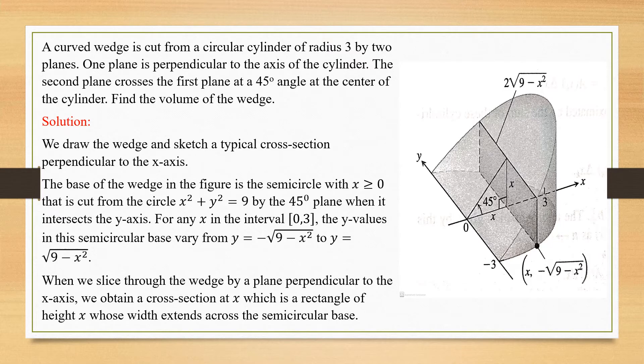Let's consider this problem. A curved wedge is cut from a circular cylinder of radius 3 by 2 planes. One plane is perpendicular to the axis of the cylinder. The second plane crosses the first plane at a 45 degree angle at the center of the cylinder. Find the volume of the wedge.